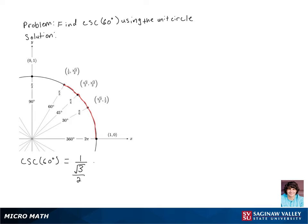Dividing by fractions is the same as multiplying by our reciprocal, so we get 2 over root 3. We don't like having radicals in the denominator, so we're going to multiply by root 3 over root 3, and then we'll get our final answer of 2 times root 3 all over 3.